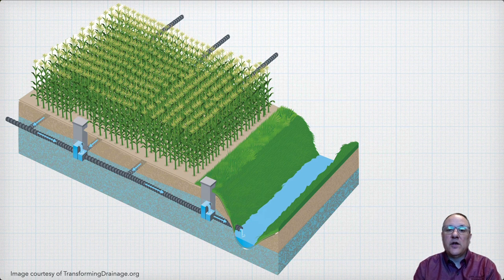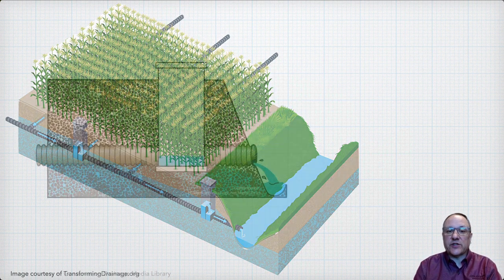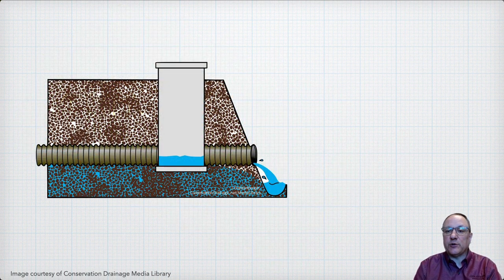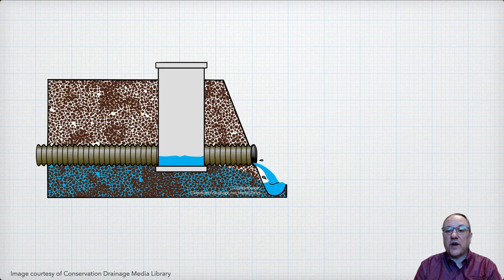Then, when full drainage is needed — typically leading up to planting and other spring field operations, potentially prior to fall harvest, or after large rain events — the control structure is fully opened to put the system back into conventional drainage mode.